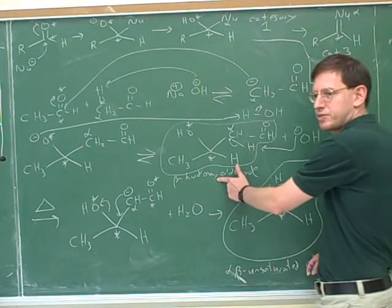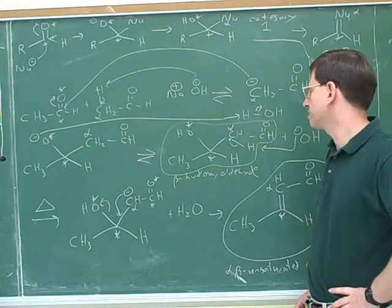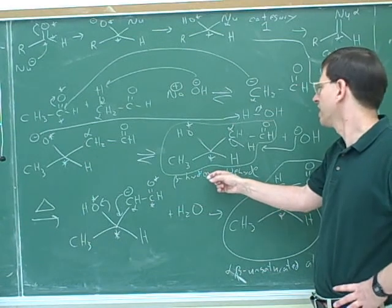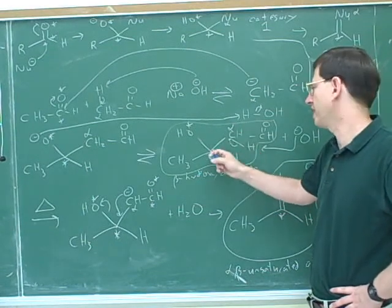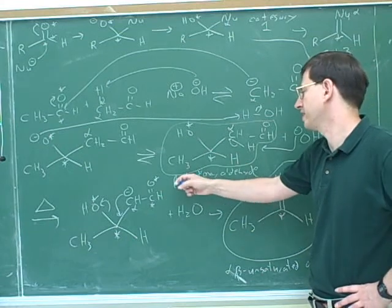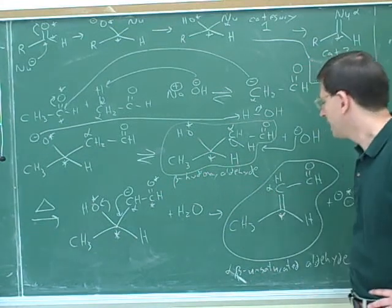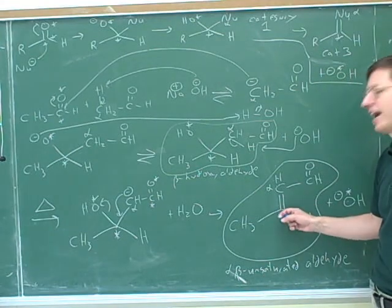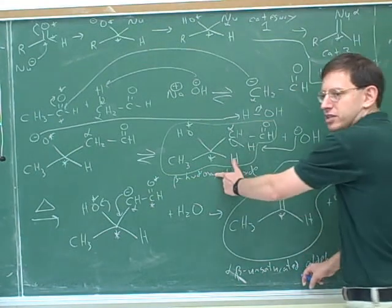I find that students tend to get these two names confused. For example, a lot of times students would say this is an alpha-beta hydroxy. But that doesn't make sense because there's no hydroxy on the alpha. There's only a hydroxy on the beta. So this is just a plain beta hydroxy. Here it makes sense to say alpha-beta unsaturated because the double bond is between the alpha and the beta carbon. So we don't want to confuse these two names.